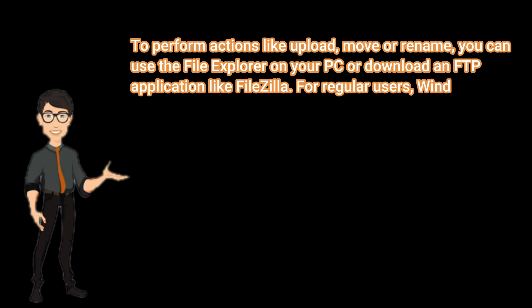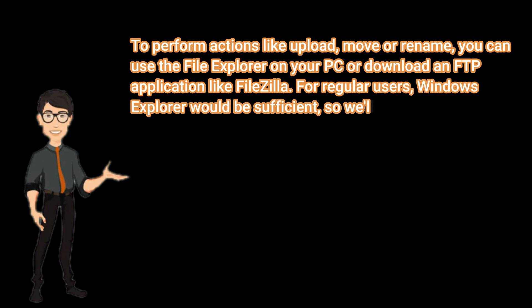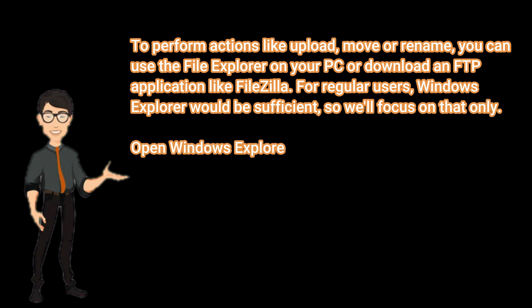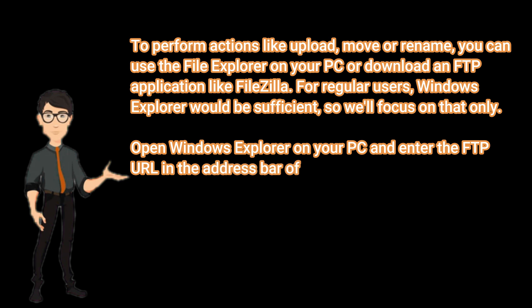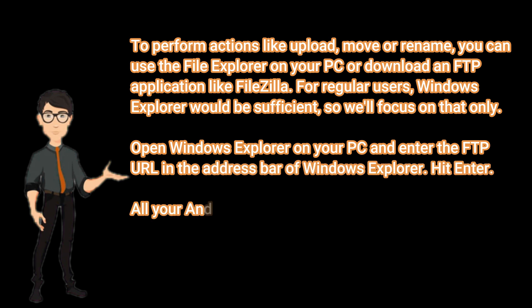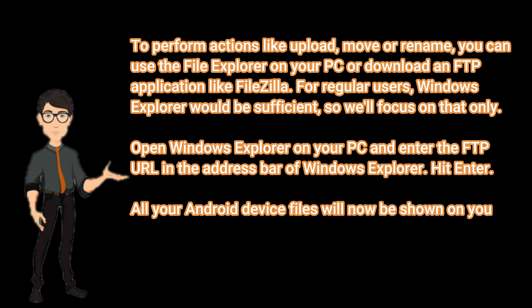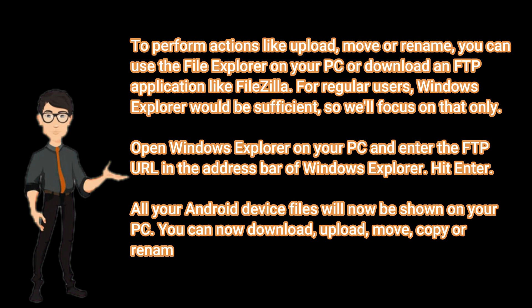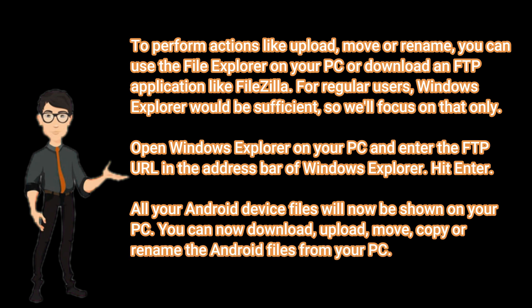For regular users, Windows Explorer would be sufficient. Open Windows Explorer on your PC and enter the FTP URL in the address bar, then hit Enter. All your Android device files will now be shown on your PC. You can now download, upload, move, copy, or rename the Android files from your PC.